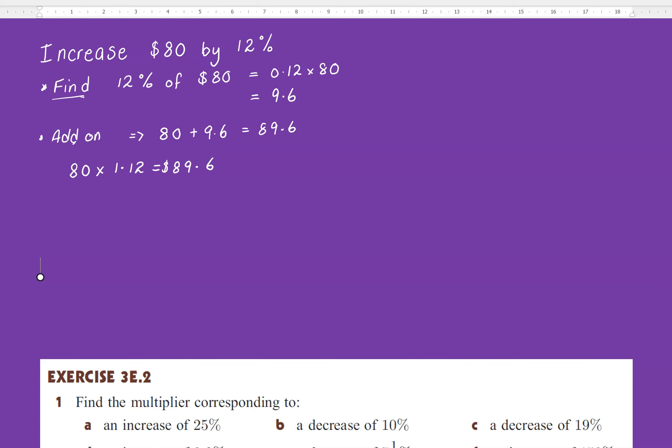Now why is that? Well, if you think about it, when you add on, this is the 12%. This is 100% of your original. So what is 100 plus 12? That gives you 112%. And if we change that to a decimal, that's 1.12.